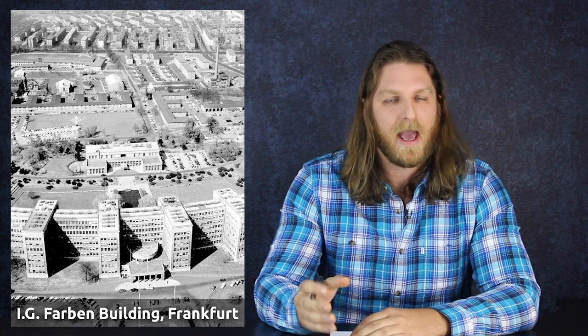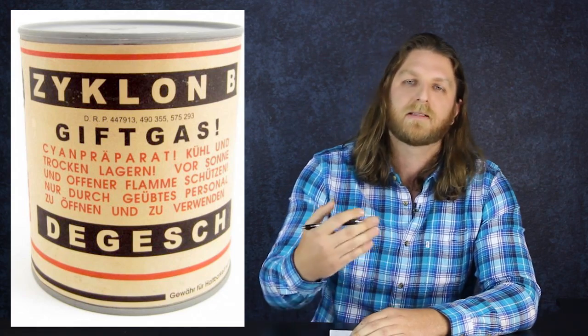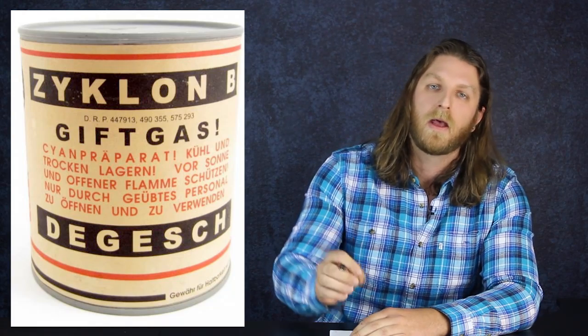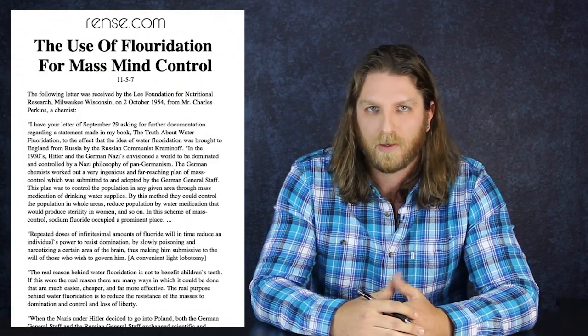Perkins allegedly had contact with a German chemist at IG Farben, the fourth largest chemical company in the world at the time, and played a crucial role in the Holocaust by supplying Zyclon B, a cyanide-based pesticide, to Nazis to murder millions in gas chambers.